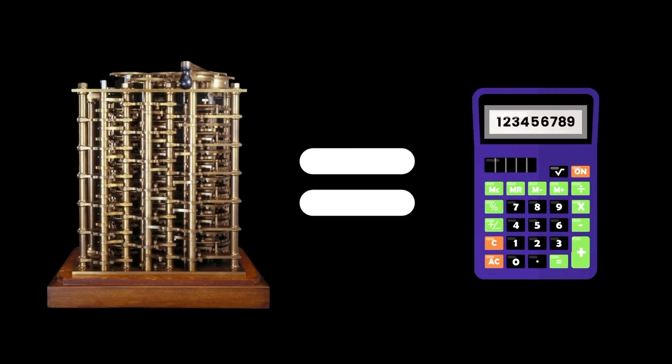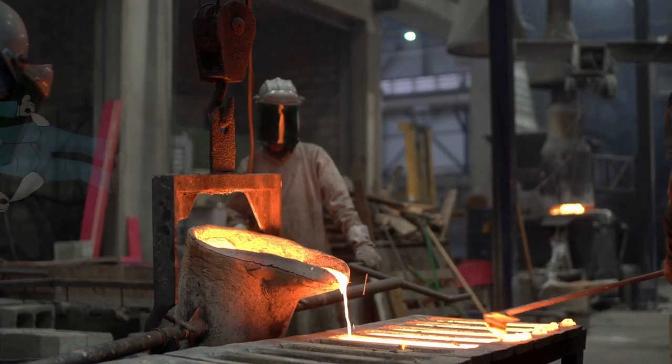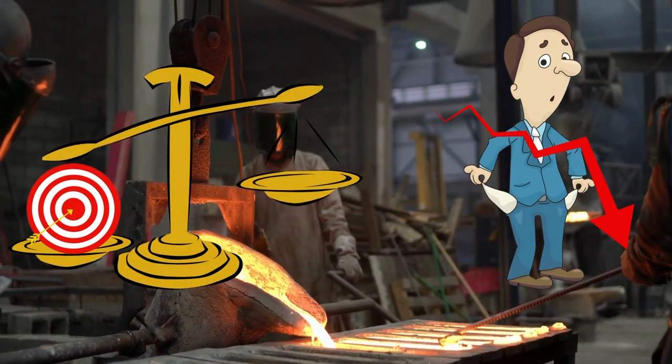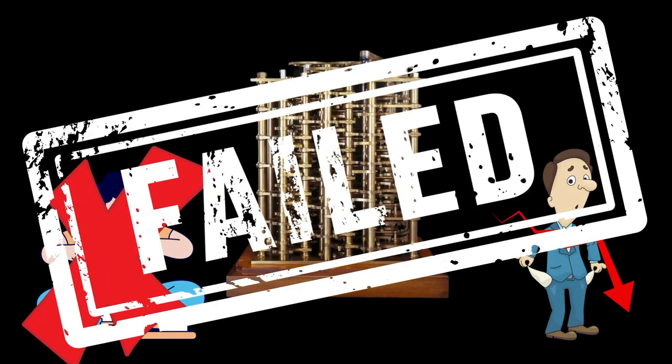This was effectively a mechanical calculator, however the limitations in metalworking techniques of the time meant that a sufficiently precise machine would be uneconomical and ultimately the project was abandoned by the British government in 1842 as a failure.